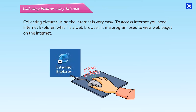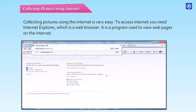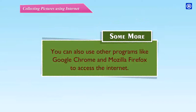Step 1: Double-click on the Internet Explorer icon. The Internet Explorer window opens. Step 2: Type the following website in the address bar: www.google.com. Step 3: Hit the Enter key or click Go To. You can also use other programs like Google Chrome and Mozilla Firefox to access the Internet.